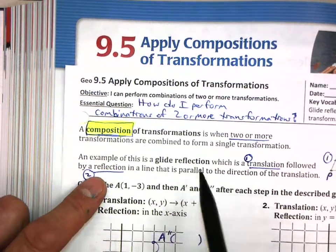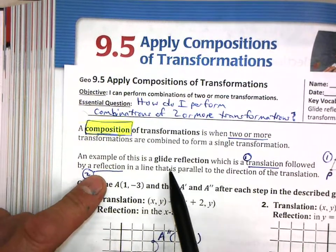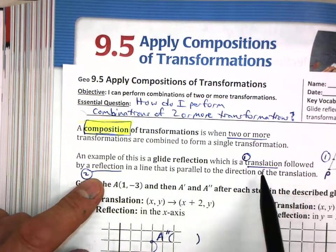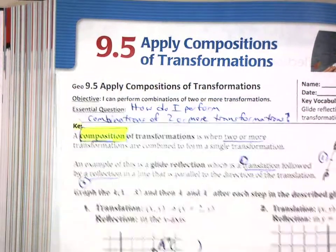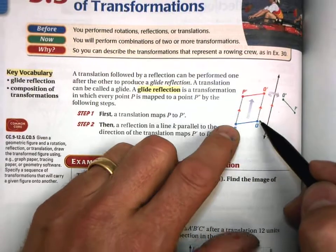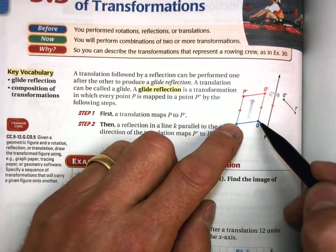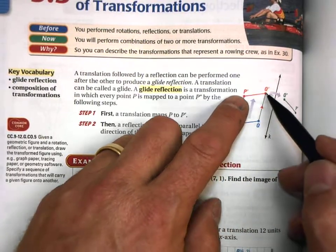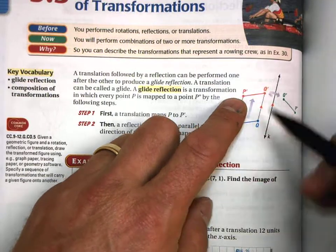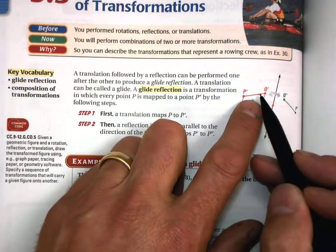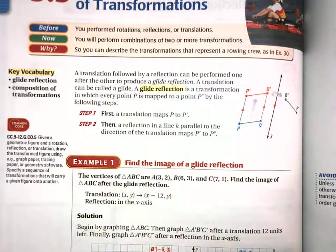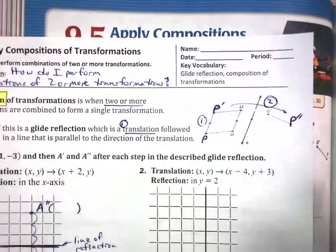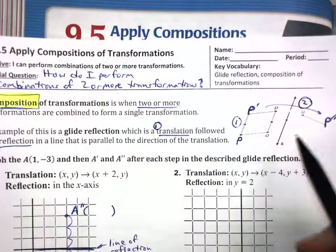An example of that is a glide reflection, which has a translation and then a reflection. Let's look at it here in the book first. Here is our segment — first we slide it, which is a translation, and then we flip it, which is a reflection. And that's what I am indicating here in your notes.